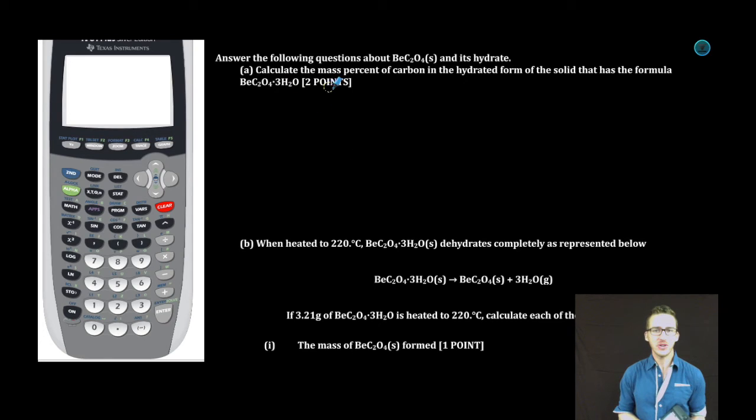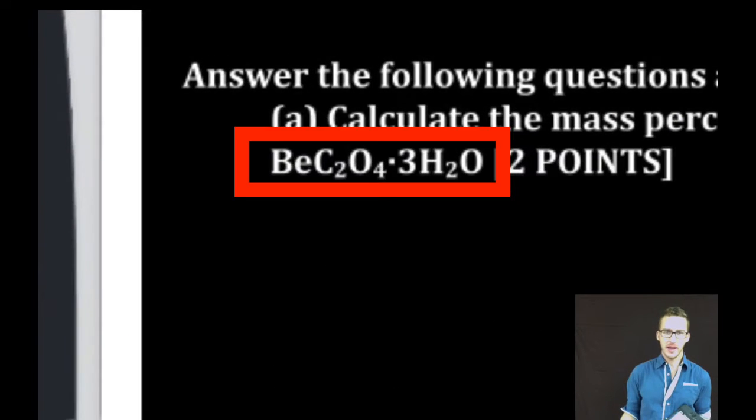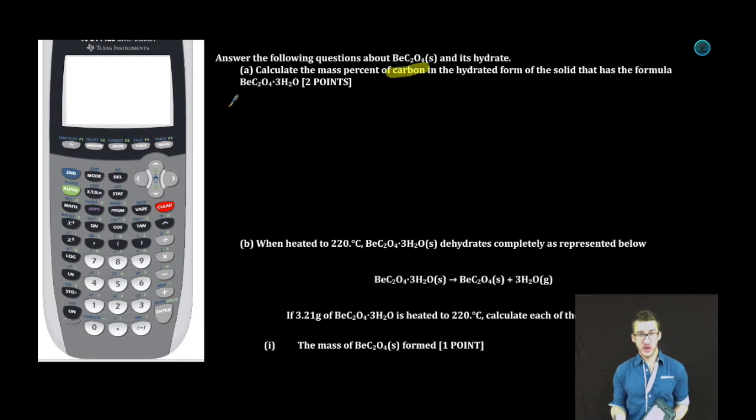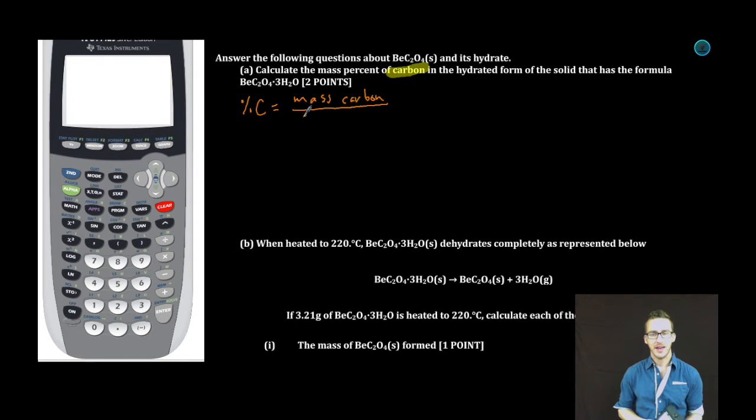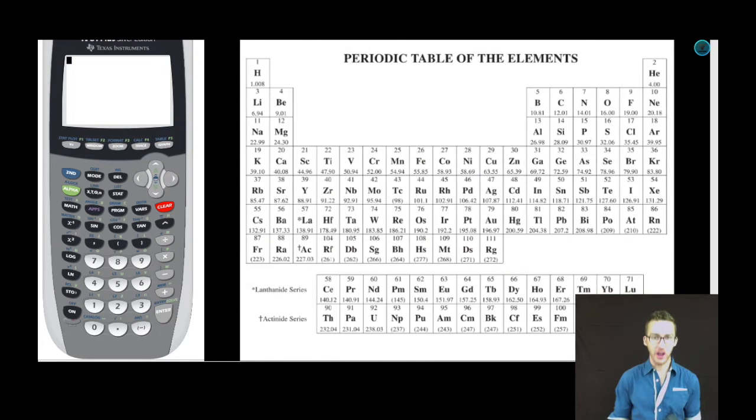We are asked to calculate the mass percent of carbon in the hydrated form of the solid that has the formula shown. This is a straightforward mass percent calculation. Basically, what is the mass carbon out of the total mass of the compound? Remember, to convert that to percent, you're going to multiply that by 100. Periodic table is going to come in handy here.